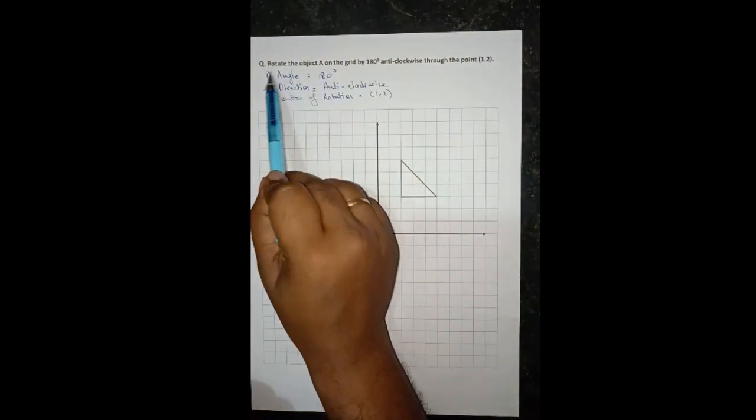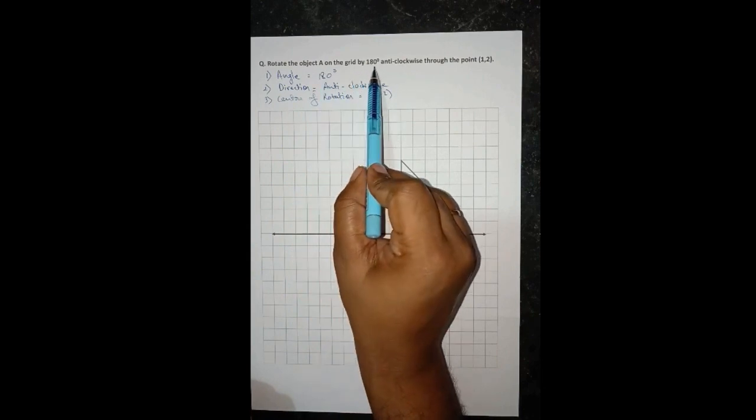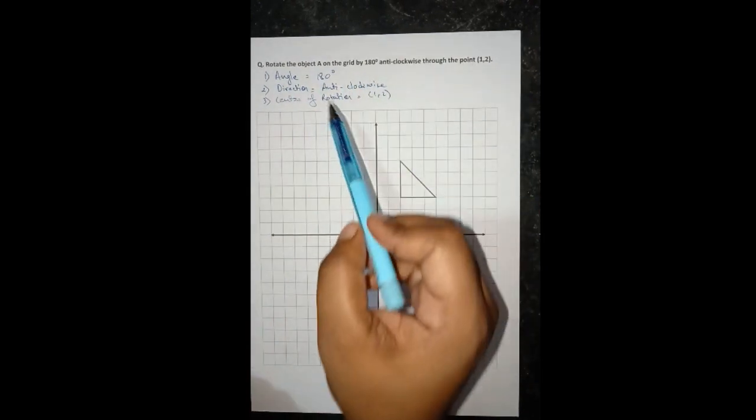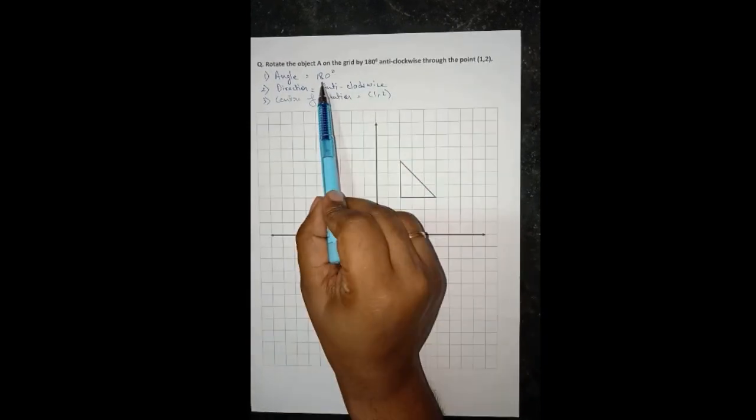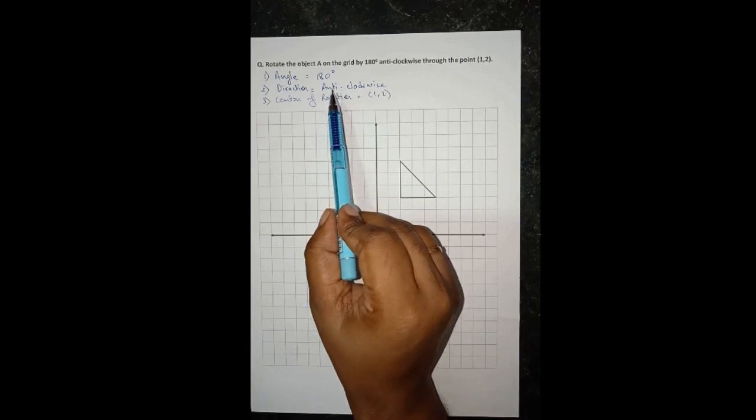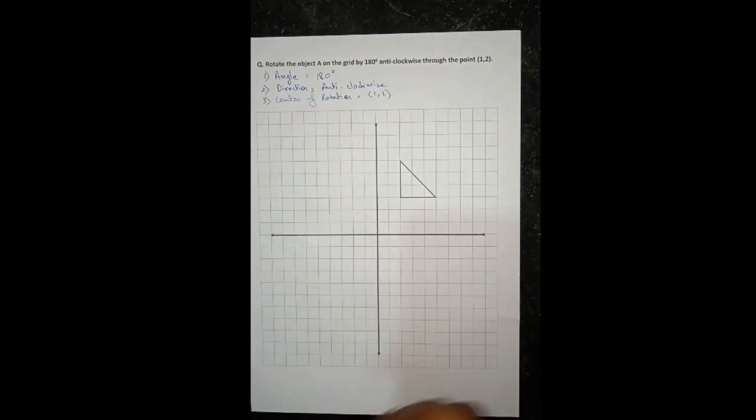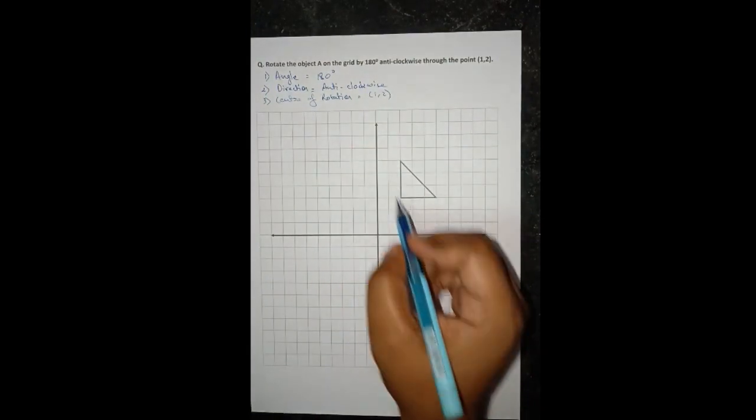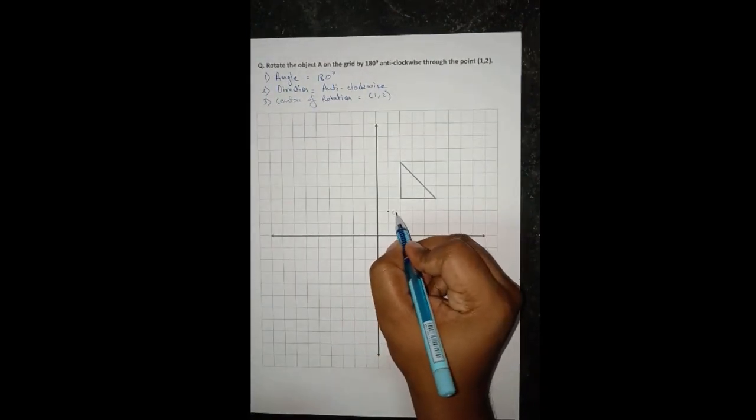Let's see one more example. Here is one more question: rotate the object A on the grid by 180 degrees anticlockwise through the point 1 comma 2. So again everything is same, only the degrees is now 180, previously it was 90, now it is 180. I'll first of all locate the point, center of rotation 1 comma 2, so here it is.